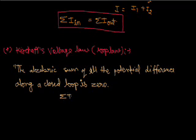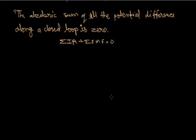The formula is: summation of IR plus summation of EMF equals zero. A closed loop can be traversed in any direction. If the potential increases, assign a positive sign; if potential decreases, assign a negative sign.